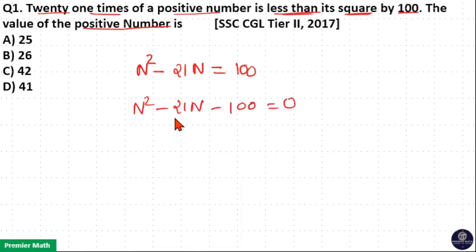Here this is -21 and this is -100. -25 × 4 is -100 and -25 + 4 is -21N.